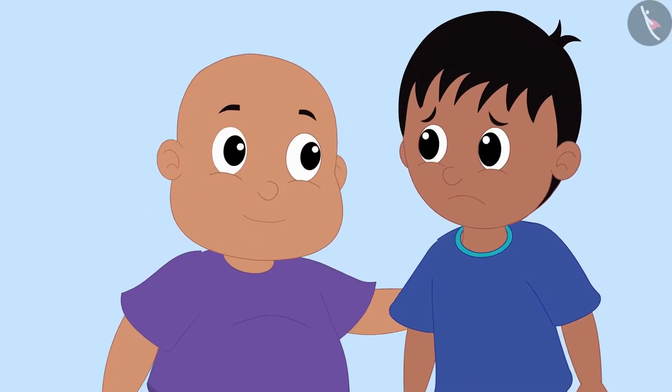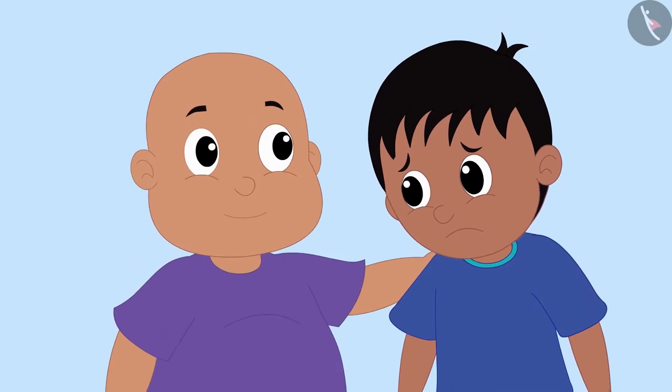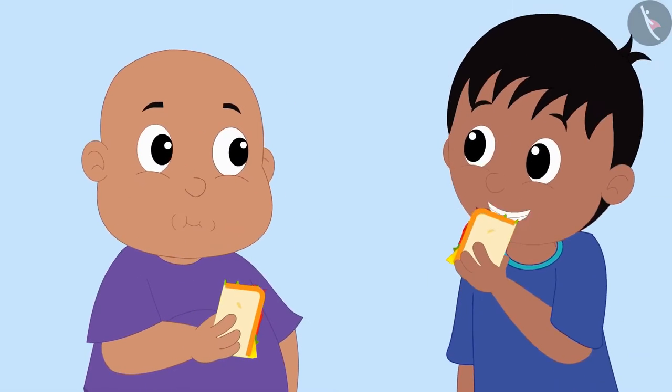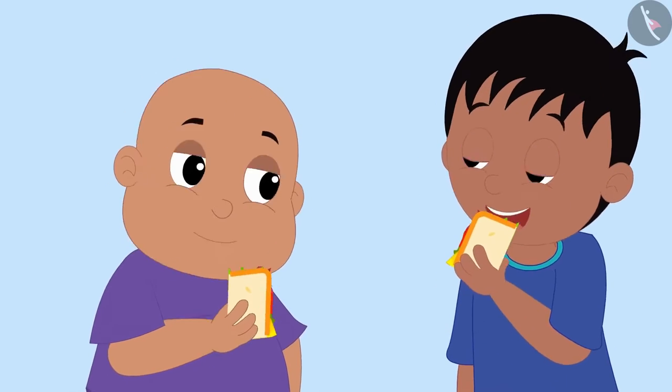Raju became depressed after knowing this. Seeing Raju sad, Bablu broke a piece of his sandwich and gave it to Raju. They both happily ate the sandwich and started enjoying the party.